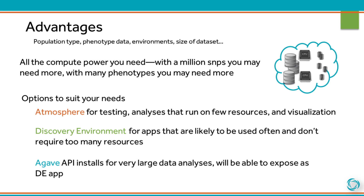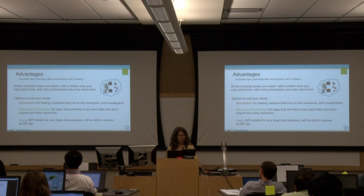You can get the compute power that you need. With a million SNPs and thousands of phenotypes, you're probably going to need more than the resources available in your lab — you may even need more than what's available on your campus. We already have use cases where people in relatively well-resourced places, adding a large number of phenotypes like metabolites, start to need some serious compute resources, and that is available to you.